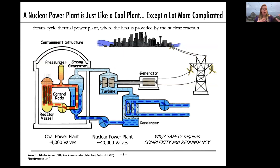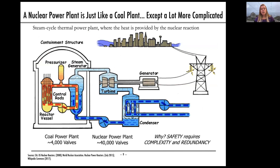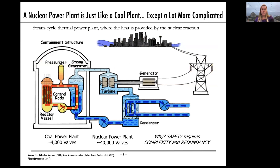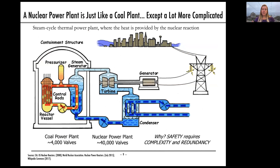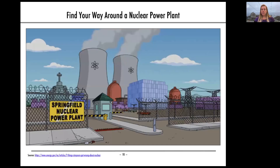We then take that enriched uranium and put it in our nuclear power plant. After that, we're simply taking the heat of the nuclear reaction — it operates just like any other steam cycle power plant. We take the heat, create steam, turn a turbine, turn a generator, and create electricity. The difference is that a nuclear power plant is much more complex because safety requires redundancy from the nuclear reaction.